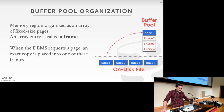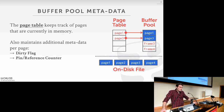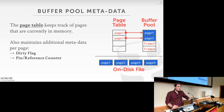The buffer pool is organized as a memory region that is an array of fixed-size pages. Each array entry is called a frame, and it's the size of a disk page — we map disk pages into these slots. When the DBMS requests a page, it loads an exact replica of the page into one of these frames. For example, if we need page one, the buffer pool manager loads that page into a frame; if we need page three, that goes into another frame. We need an additional layer of indirection called the page table to access these pages.